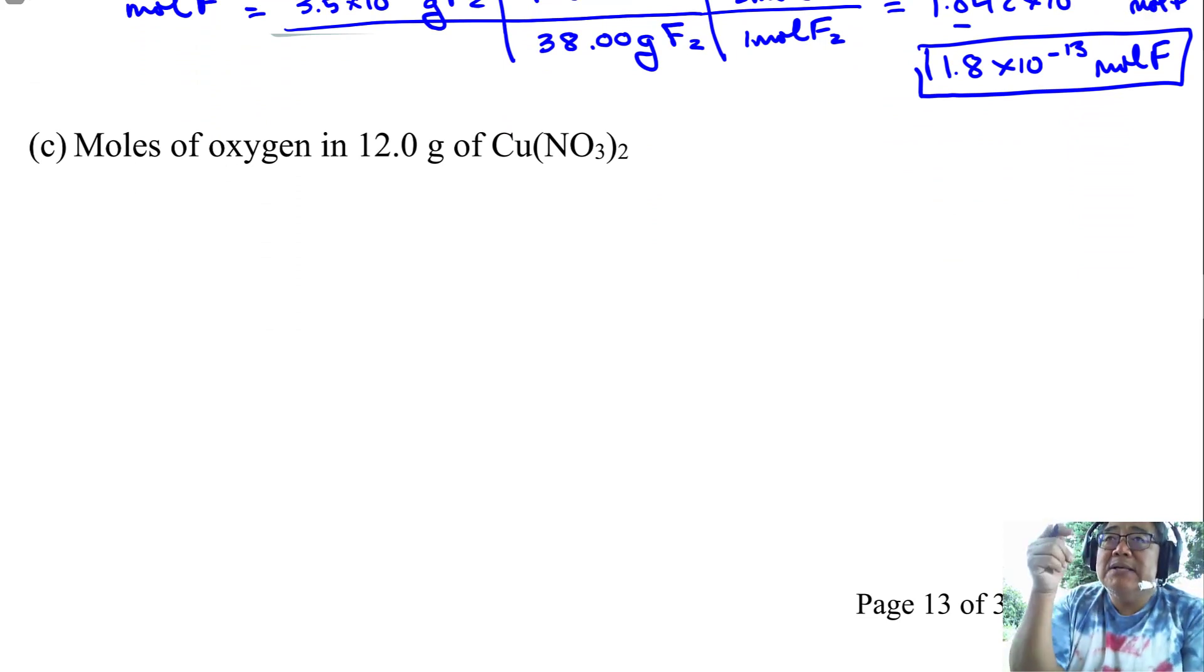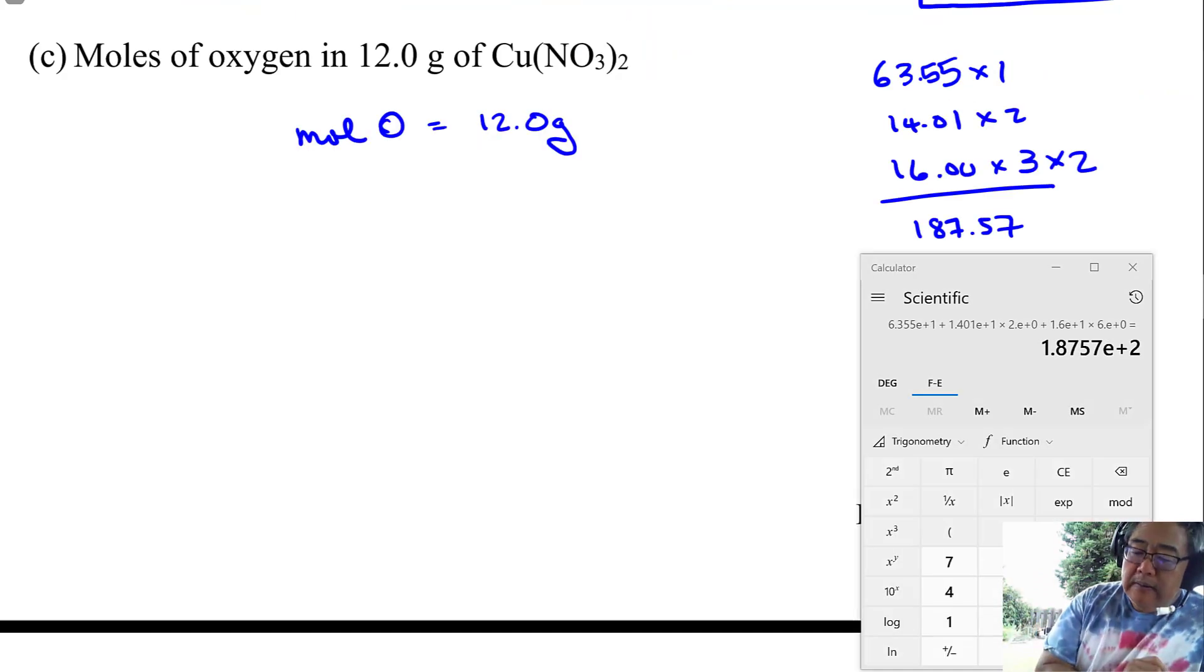Now this one only has two significant figures because of the 3.5. And so I end up rounding the answer to 1.8 times 10 to the minus 13 moles of fluorine. And then again, I'll pause and go ahead and try doing this next one. Now, my recommendation is if you do these and you get the setup wrong and the calculation or the calculation wrong, you should just do the whole thing again and try to make sure that you learn this pattern.